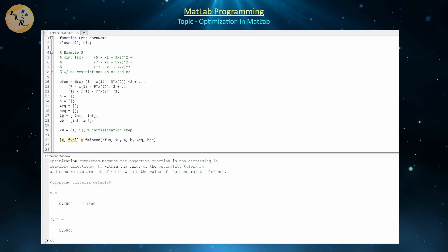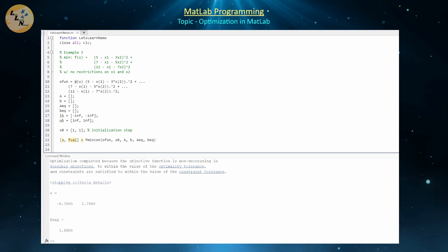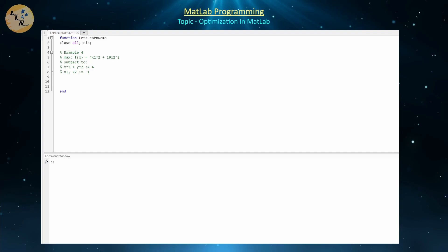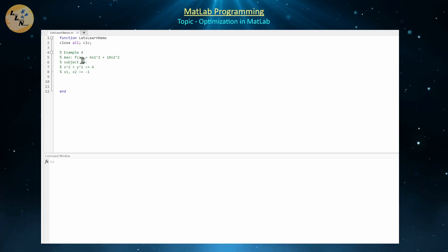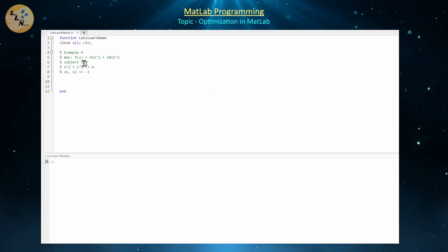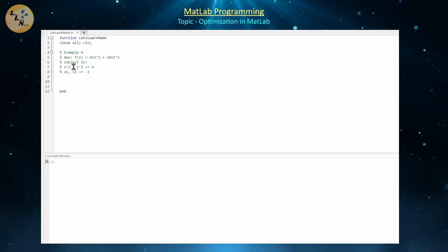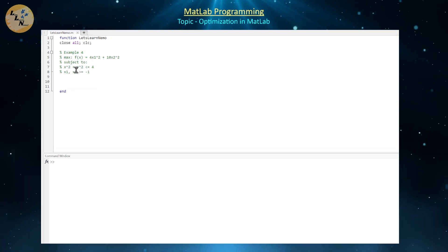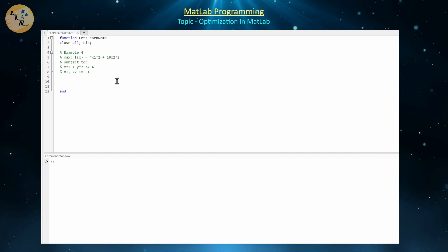Now let's look at an example with non-linear constraints in addition to a non-linear objective. The goal is to maximize f(x) = 4x1² + 10x2² subject to the non-linear inequality constraint x1² + x2² ≤ 4 — the interior of a circle of radius 2 — with the additional restriction x1, x2 ≥ −1. This is a subset of that circle's interior.